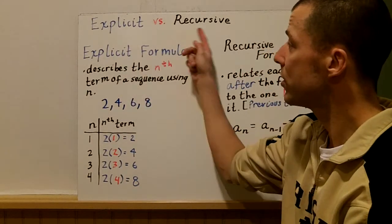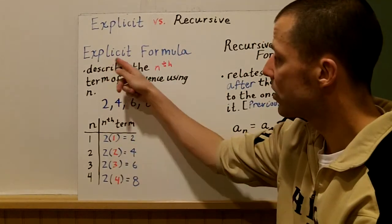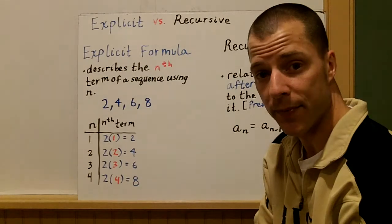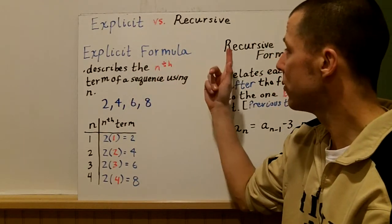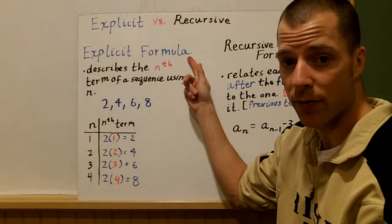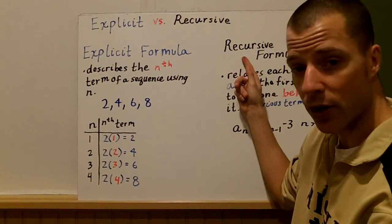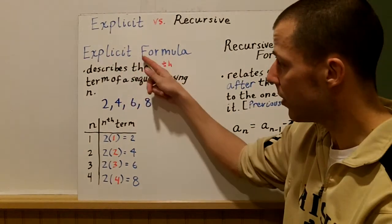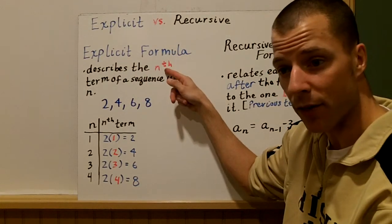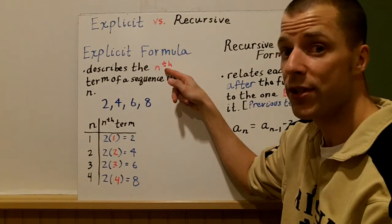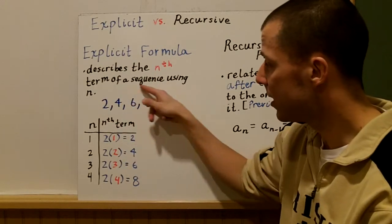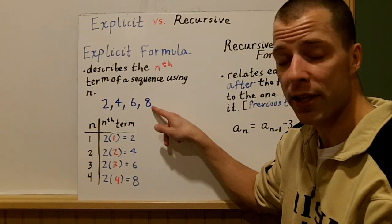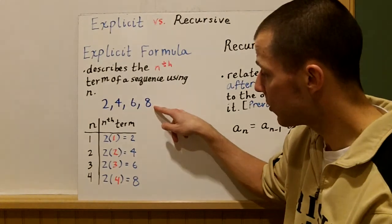Explicit versus recursive — what's the difference? An explicit formula describes the nth term of a sequence using the variable n. The big difference is that explicit doesn't use the previous term to get the next term, whereas a recursive formula uses the previous term to get the next. Let's look at an example of an explicit formula. We're describing the nth term — maybe the fifth or sixth term — using n. Here's a sequence of numbers — we call this a finite sequence because there are no dots afterwards.